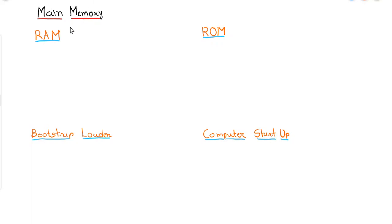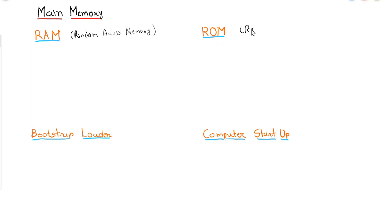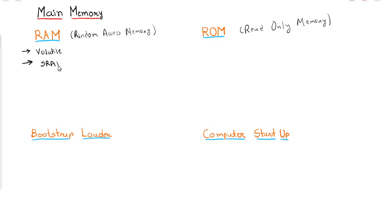Now we will focus on main memory. If we consider the components of main memory, we have two components: RAM and ROM. RAM is known as Random Access Memory.